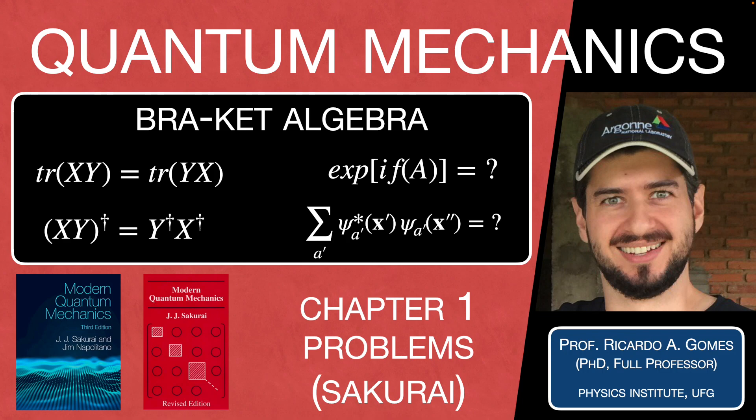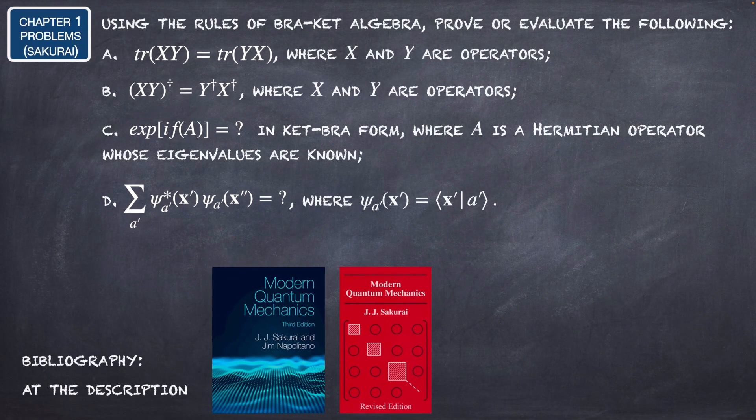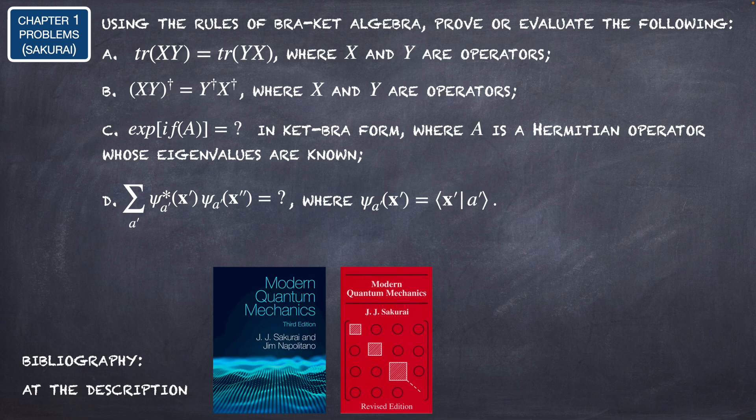Hello everyone, I'm Professor Ricardo and in this video we are going to solve a quantum mechanics problem using the rules of bracket algebra. We need to prove or evaluate: letter A, the trace of XY equals the trace of YX where X and Y are operators; letter B, (XY)† equals Y†X†.